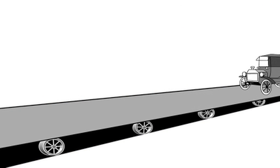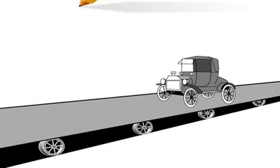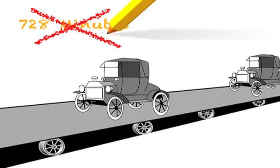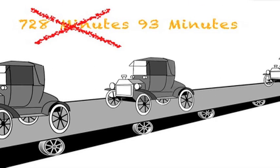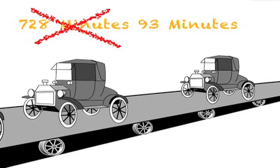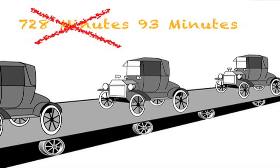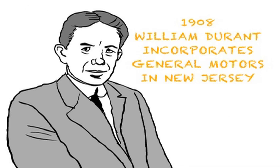Ford cut his production time from a single Model T from 728 minutes to just over 93 minutes. As a result, Ford Motor Company flourished, more cars were made, prices were lowered, and more cars were sold. Of course, as is the way of capitalism, his colossal rise was met with inevitable competition.